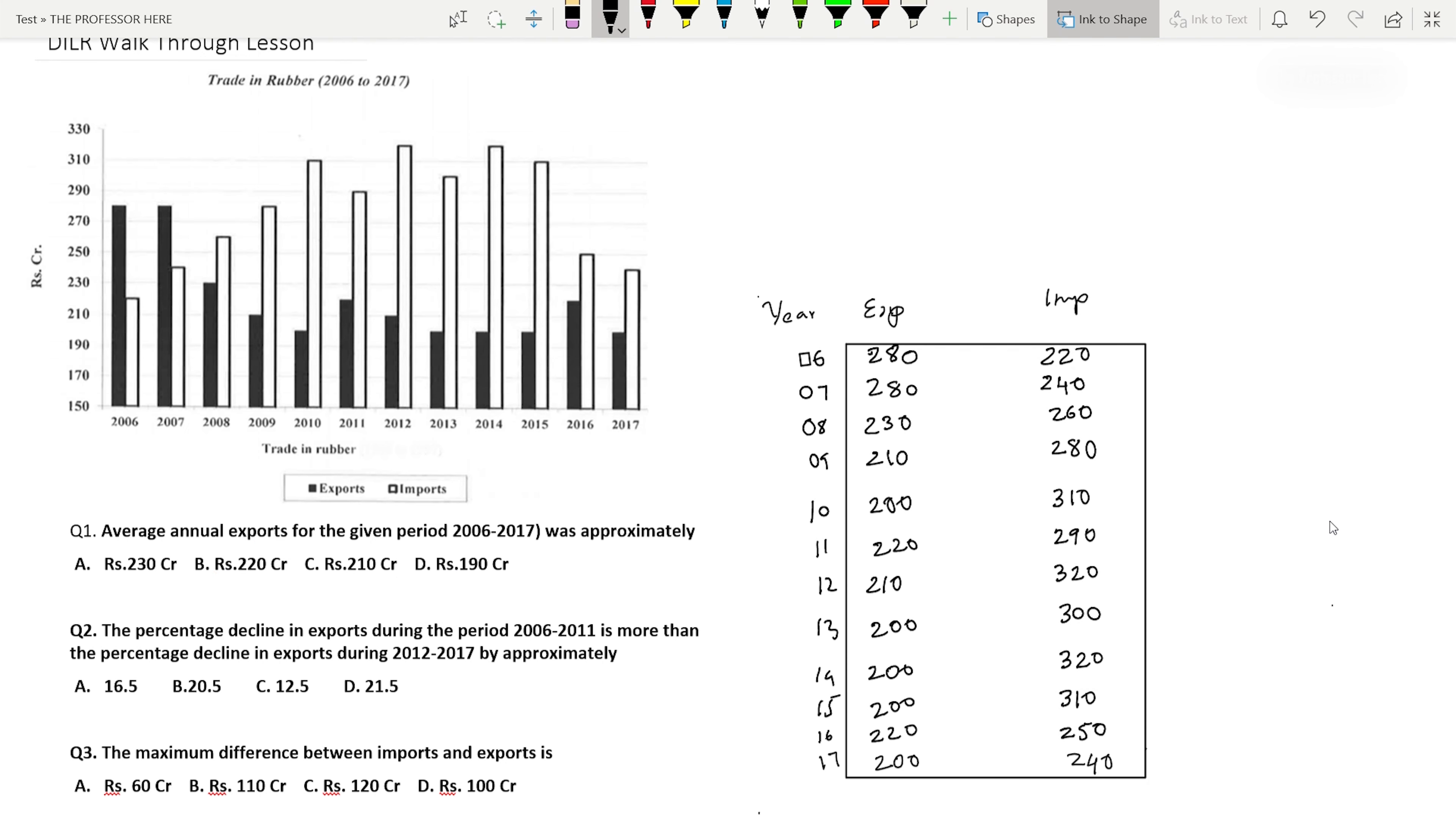Now we go to the questions. Question number one: Average annual exports for the given period 2006 to 2017 was approximately. To find the average, add all the exports and divide by the number of years. Number of years from 2006 to 2017 is 12.